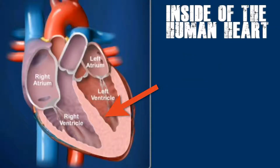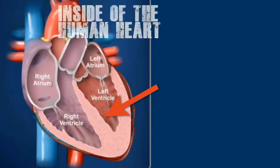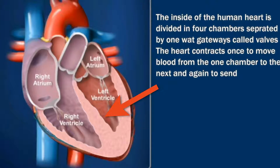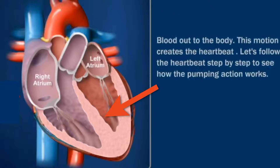Now let's check the heart interior. The inside of the human heart is divided into four chambers separated by one-way gateways called valves. The heart contracts to move blood from one chamber to the next and again to send blood out to the body. This motion creates the heartbeat. Let's follow the heartbeat step by step to see how the pumping action works.